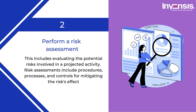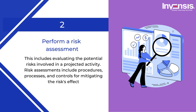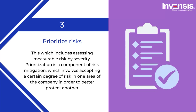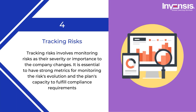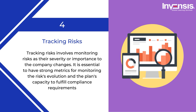Second, perform a risk assessment, which includes evaluating the potential risks involved in a projected activity. Risk assessments include procedures, processes, and controls for mitigating the risk's effect. Third, prioritize risks by assessing measurable risk by severity. Prioritization involves accepting a certain degree of risk in one area of the company to better protect another, setting an acceptable amount of risk for various areas.